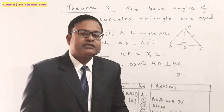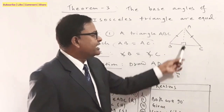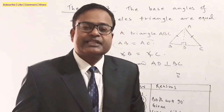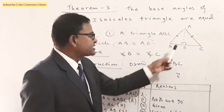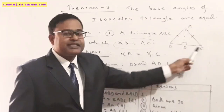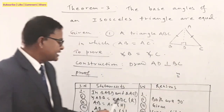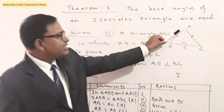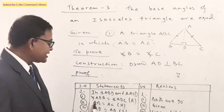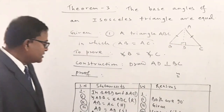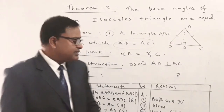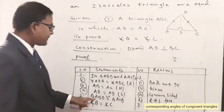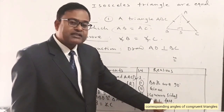Statement 2: side AB equals side AC — these are already given equal, and they are the hypotenuses. Statement 3: side AD equals side AD — common side. Therefore, triangle ABD is congruent to triangle ACD by the RHS congruency test of triangles.